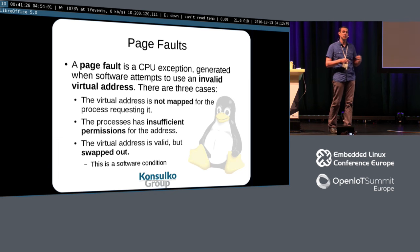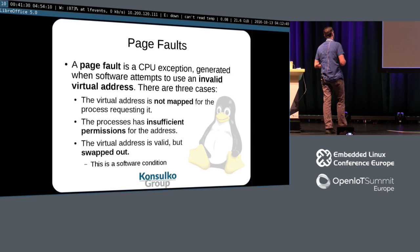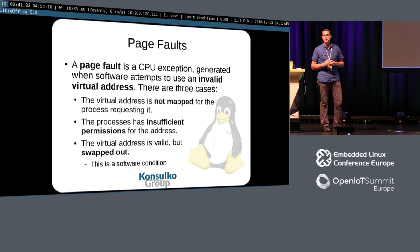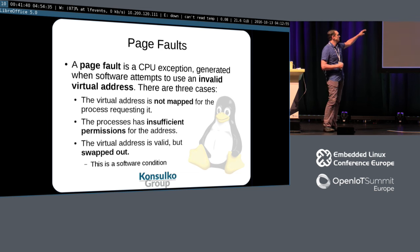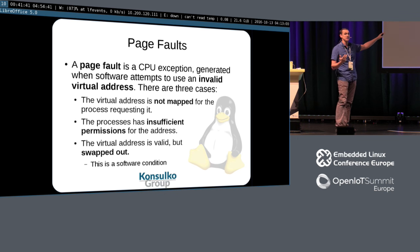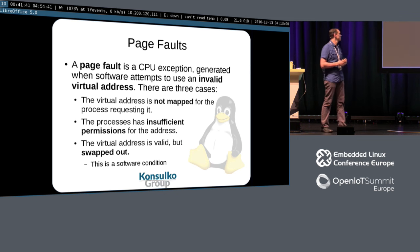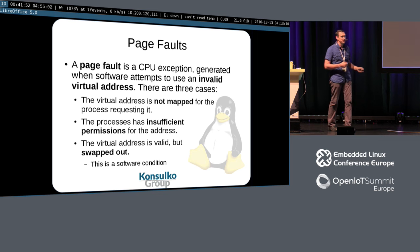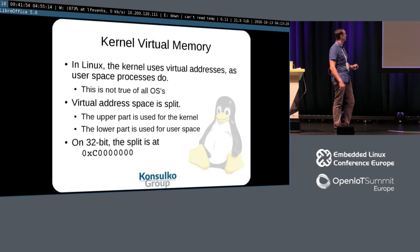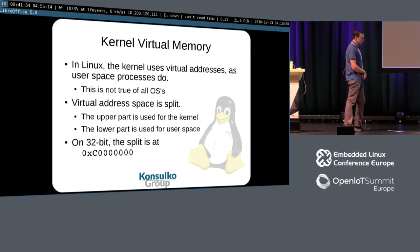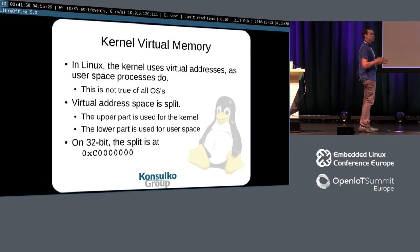In Linux, a page fault is a CPU exception generated when you access an invalid virtual address. There are three cases: first, the virtual address just isn't mapped for the requesting process; second, you don't have the right permissions; and third, it's a valid virtual address but currently swapped out — that third one is a software condition. We're going to dive into each of those, but first we'll cover the kernel virtual memory side of things.